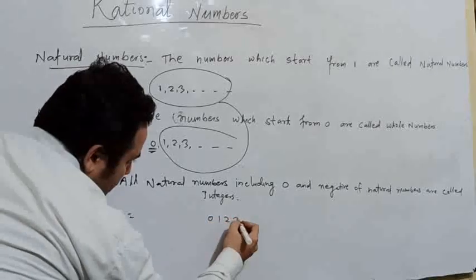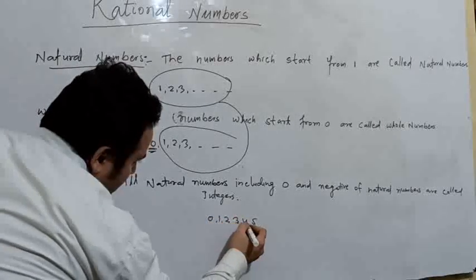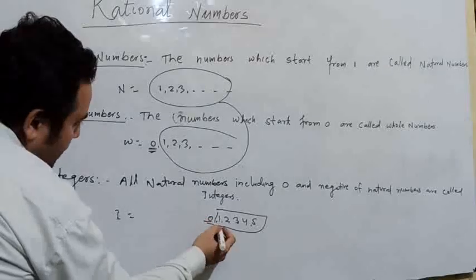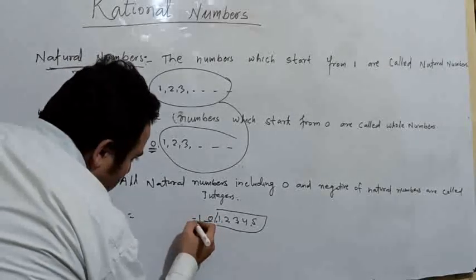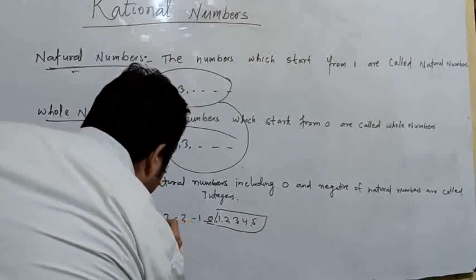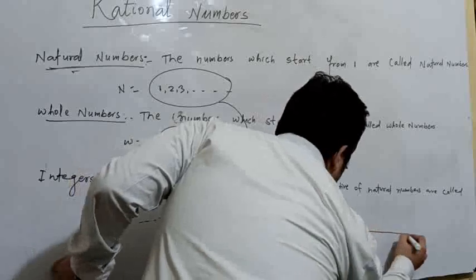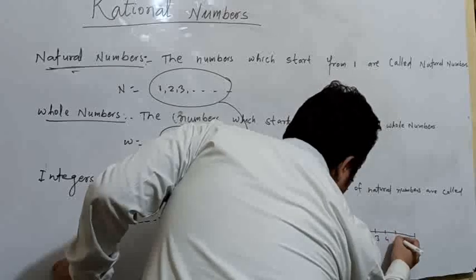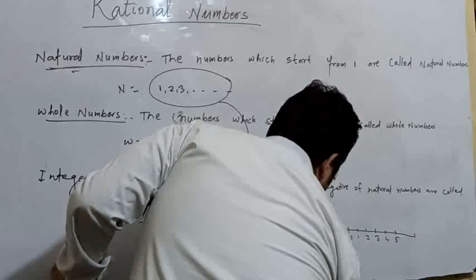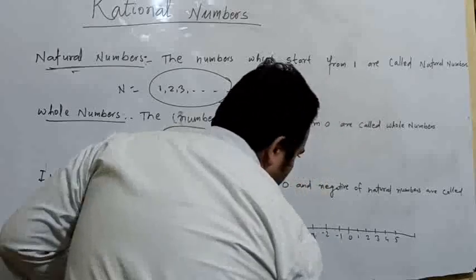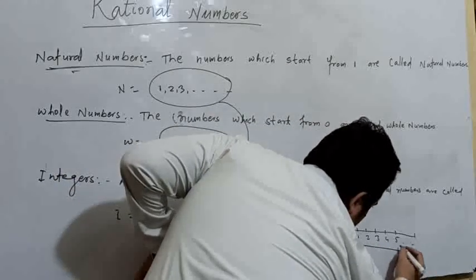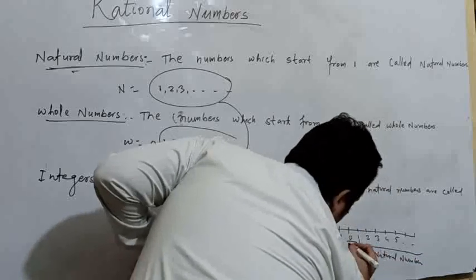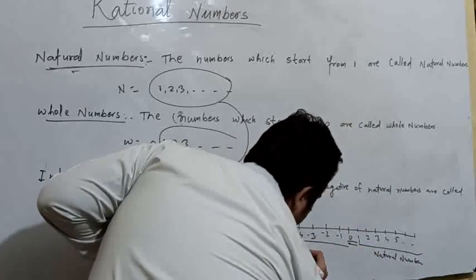We will study integers on the number line. From 1 onwards, all are known as natural numbers; here is 0; and then minus 1, minus 2, minus 3. So on the number line we have: minus 3, minus 2, minus 1, 0, 1, 2, 3, 4, 5. Here are the natural numbers, here is 0, and here are the negative natural numbers.